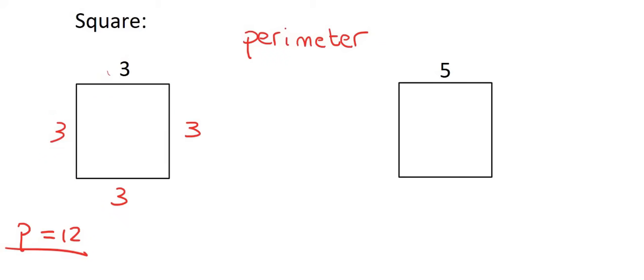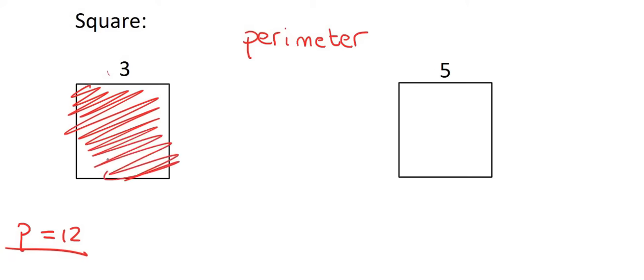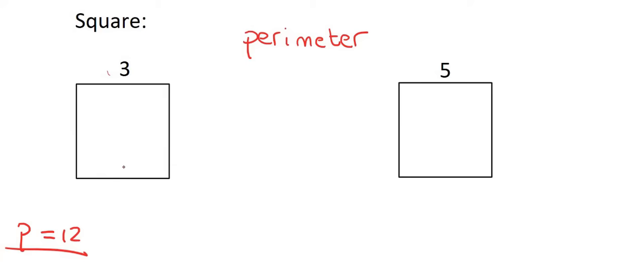Now we're going to look at area. Area is all of the stuff on the inside. Think about what the word area means. If we're looking at a rugby field, you could say that the rugby field has a really large area. Or maybe you're looking at a new house, and you can say that the lounge has a large floor area. So area is not on the outside — it's all the stuff on the inside. So how do we work out the area of a square?